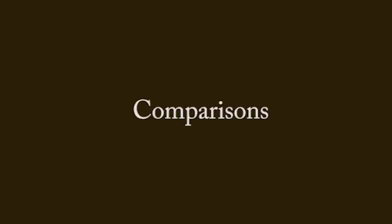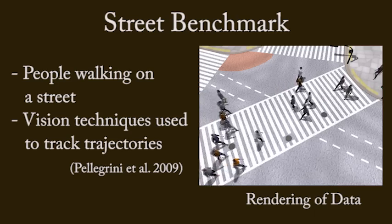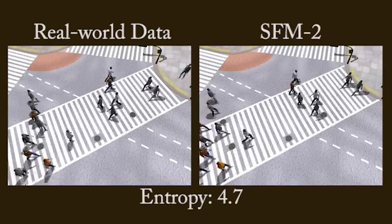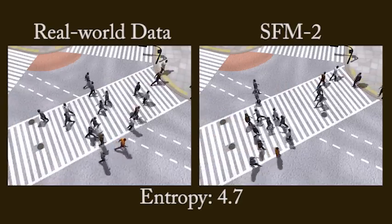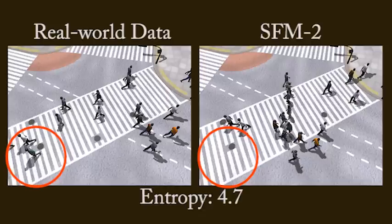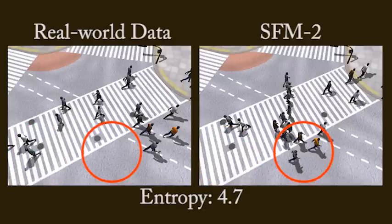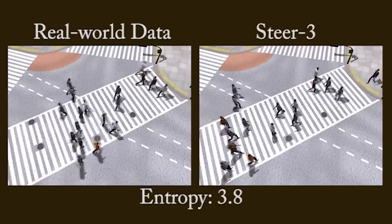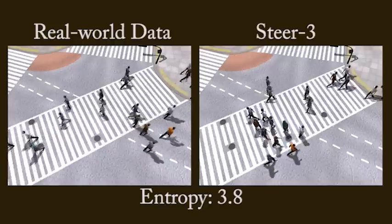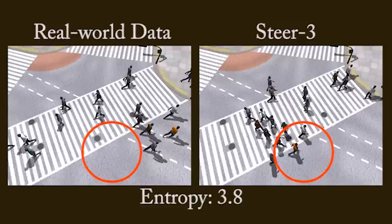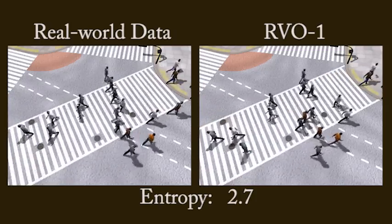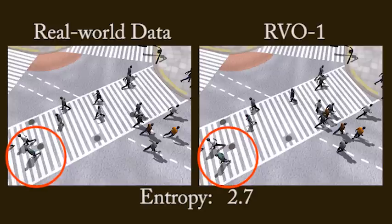We now apply the entropy metric to more complex scenarios. Here is a rendering of real-world data of pedestrians walking across the street. We compare first to a simulation with a high entropy — it has several visible differences from the data highlighted here. Here is another simulation that also scores poorly, with several differences from the data in the same areas. This simulation has a much improved entropy score and now matches the data well in the same highlighted regions.